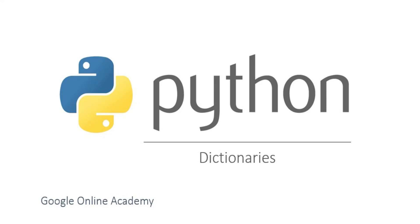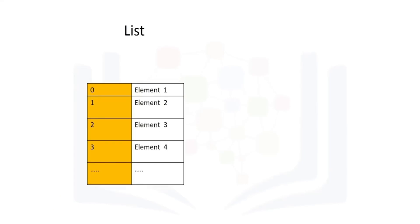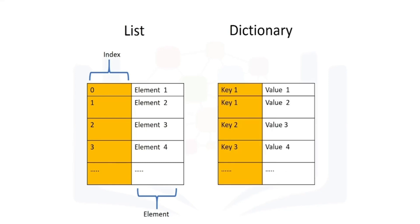Let's cover dictionaries in Python. Dictionaries are a type of collection in Python. If you recall, a list has integer indexes — these are like addresses — and a list also has elements. A dictionary has keys and values. The key is analogous to the index; they are like addresses, but they don't have to be integers. They are usually characters. The values are similar to the element in a list and contain information.